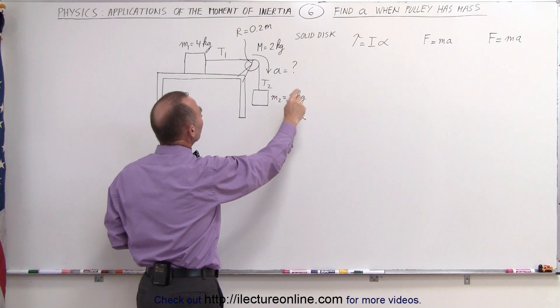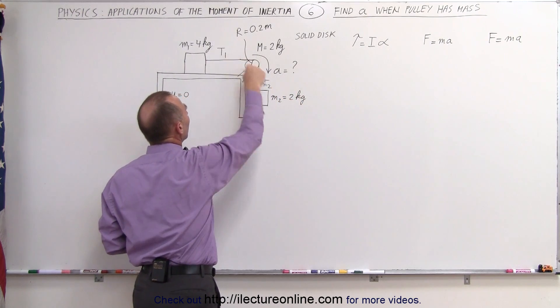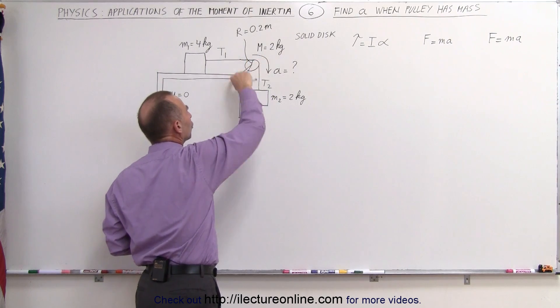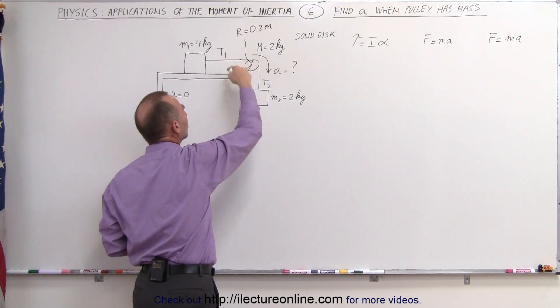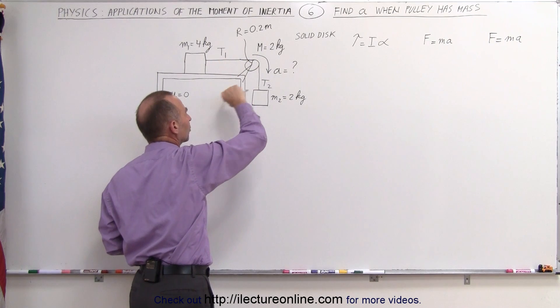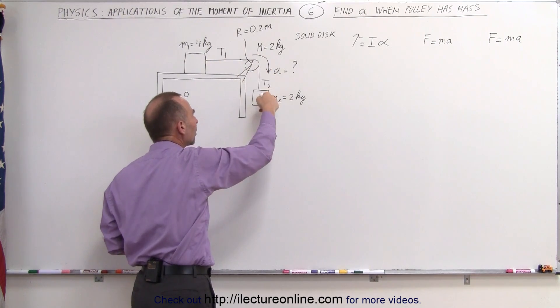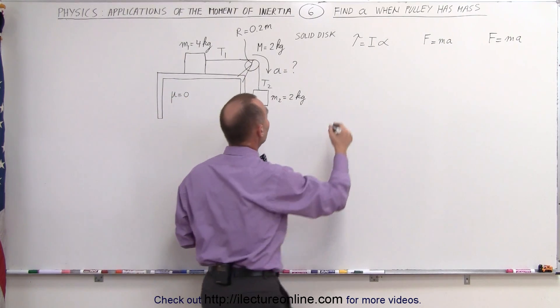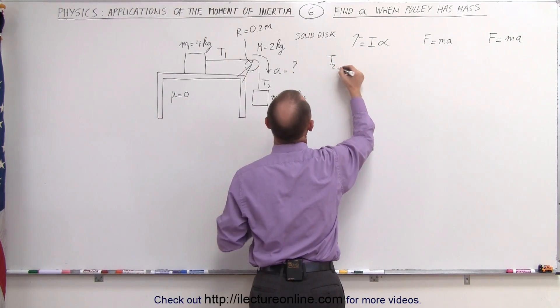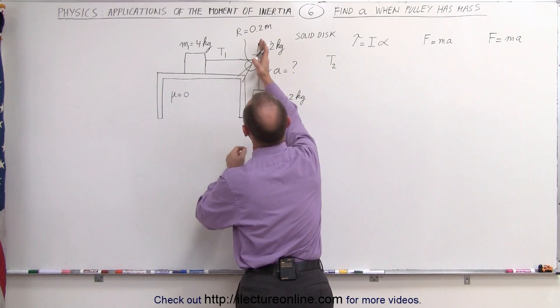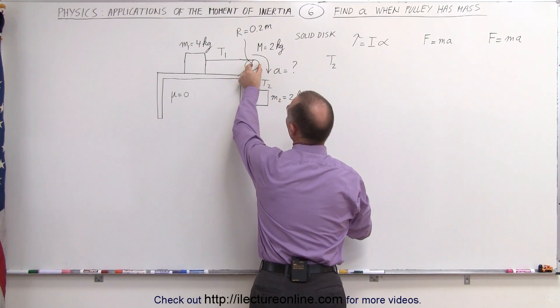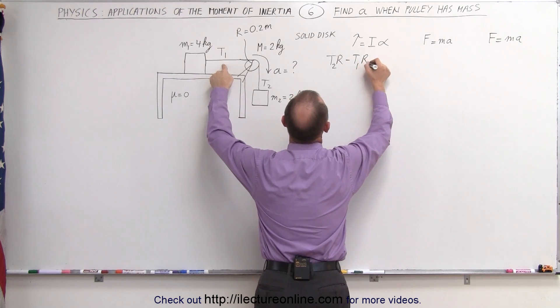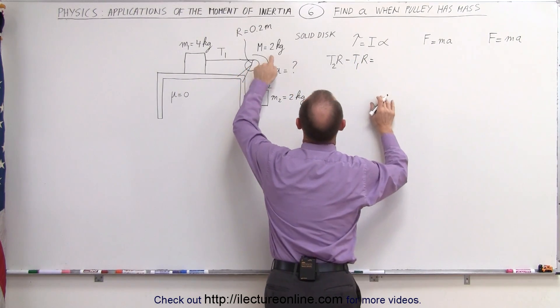The torque is caused by the fact that T2 and T1 are not equal to each other. T2 will cause a torque in a clockwise direction. T1 will cause a torque in a clockwise direction. T2 is aiding acceleration. T1 is opposing acceleration. So the torque then becomes T2 times the distance between the line of action of force and the point of rotation, which is the radius of the pulley, minus T1 times the radius of the pulley.